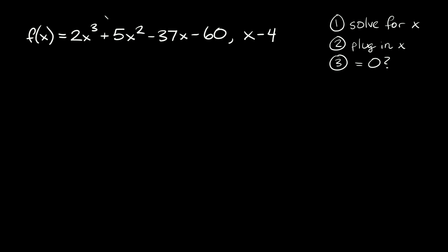So first of all this is our polynomial function right here, 2x³ + 5x² - 37x - 60. And we want to know if this binomial x - 4 is a factor of this thing. So you can basically break it down into three steps.